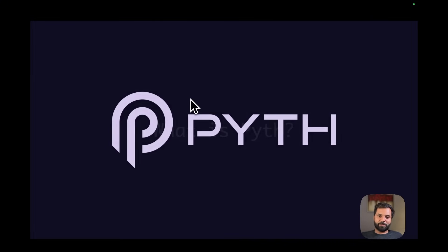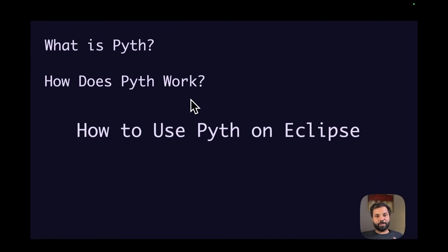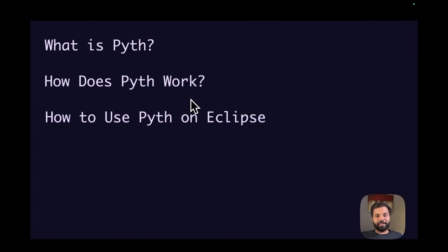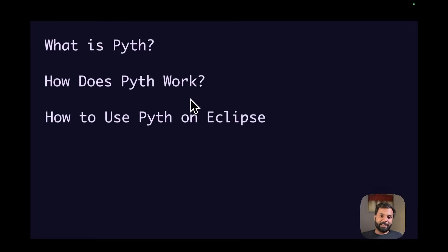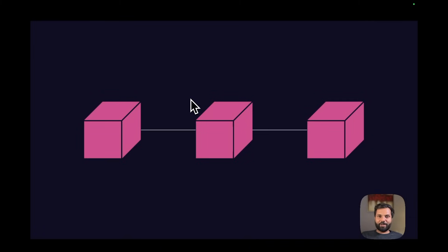We will learn what Pyth is, how it works, and how you can use it on Eclipse network. To demonstrate that, we will create a small fun TypeScript CLI application which will print that the banana is ripe if the ETH price has gone above $3,000, and print that the banana is not ripe if the ETH price is still below $3,000.